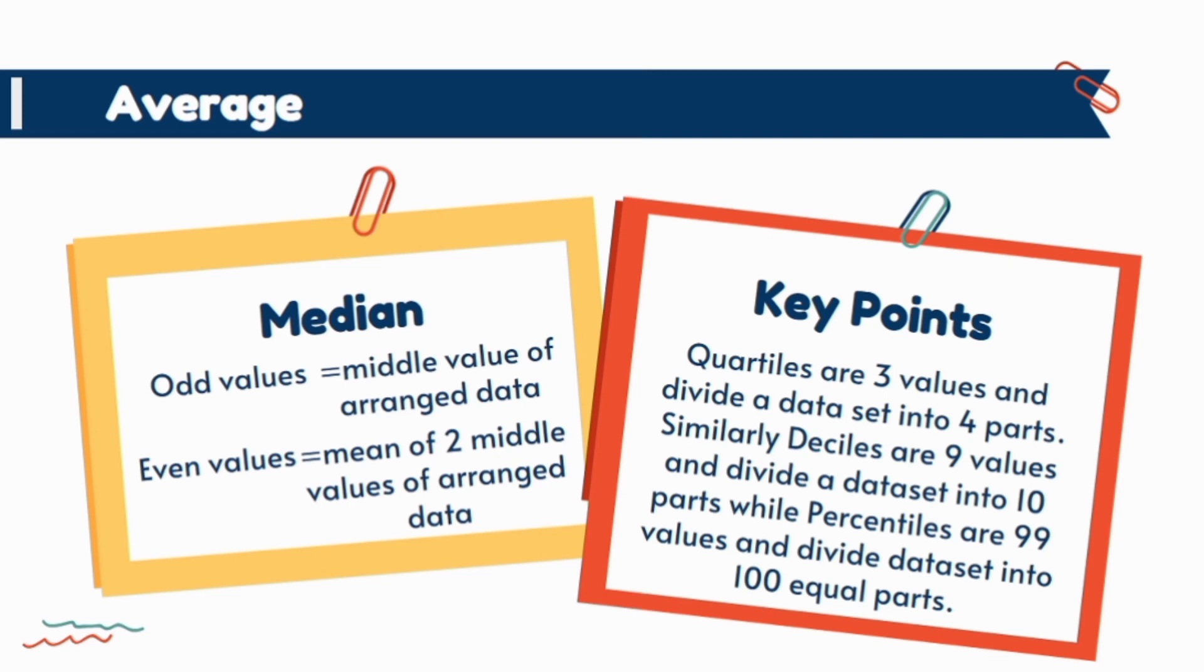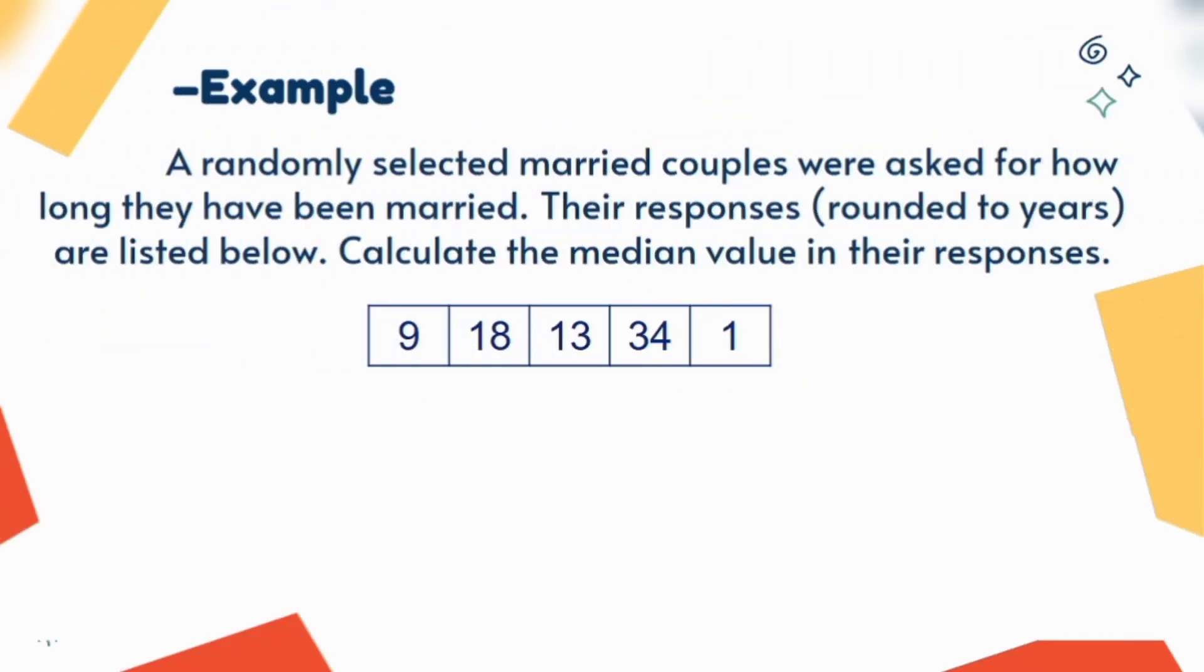In case of odd number of observations, median is the middle value of arranged data, and for even number of values the median is the mean of two middle values of arranged data set. If we have to simplify data set in term of different positions then we need to study quartiles, deciles, and percentiles.